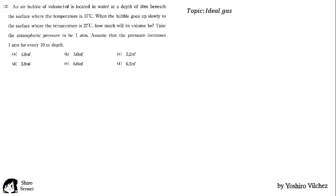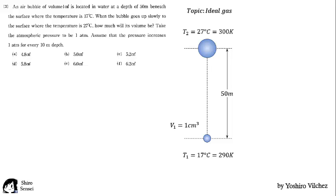The topic here is ideal gas. As the problem says, the bubble of 1 cubic centimeter at 7° Celsius, which is 290 Kelvin, goes up to the surface at 27° Celsius, which is 300 Kelvin, and at 1 atm.